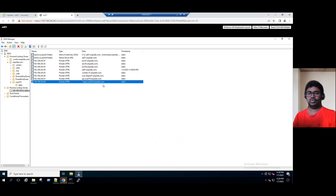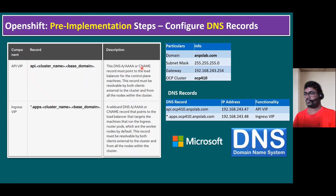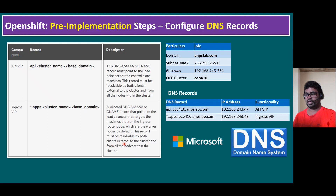As per Red Hat documentation, the API VIP record must point to the load balancer for control plane machines, and must be resolvable by both clients external to the cluster and all nodes within the cluster — that means all master nodes and worker nodes. The wildcard ingress record similarly points to the load balancer targeting machines running the ingress router pods, which are worker nodes by default. This record must also be resolved by external clients and all nodes within the cluster.